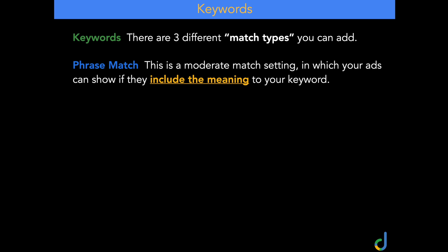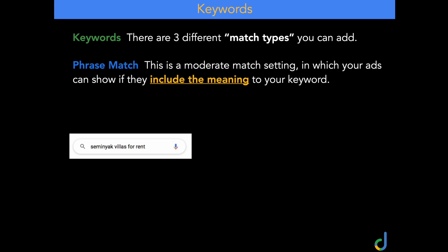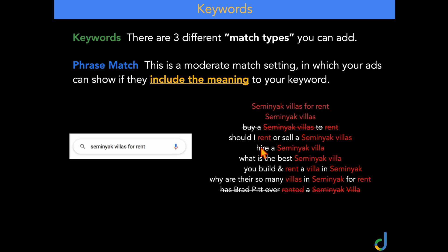Moving over to phrase match, Google explains that this is still a moderate match setting. But as I said earlier, I actually see phrase match and exact match as being very similar, and both of them being a lot more broad than what they used to be. For example, if you were targeting 'Seminyak Villas for rent,' you would still be getting keywords like 'should I rent or sell a Seminyak Villa' or 'how can you build and rent a Seminyak Villa.' So these aren't actually closely related to that search term, but they would be showing up in these related search terms.